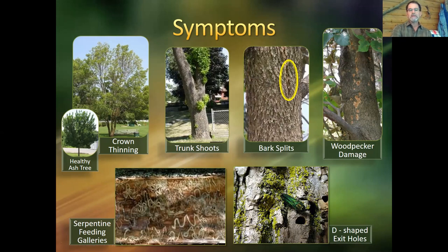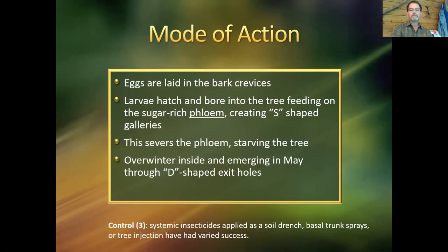This insect is currently in the eastern half of Tennessee and eventually it will probably take over the whole state. The eggs are laid in bark crevices; the larvae hatch and immediately bore into the tree, feeding on the sugar-rich phloem, creating those S-shaped galleries in the process. Tree death is gradual — when the insect is feeding in the phloem, water still reaches the crown but sugar no longer reaches the roots. Typically trees will die in about two to maybe five years. These S-shaped galleries sever the phloem, starving the tree. The insects overwinter inside and emerge in May through the D-shaped exit holes.